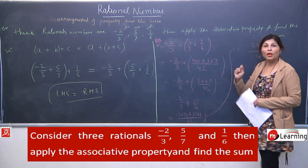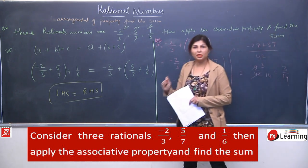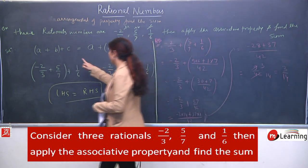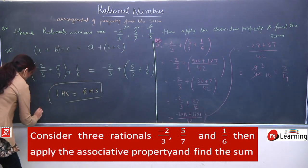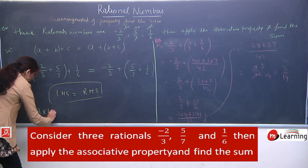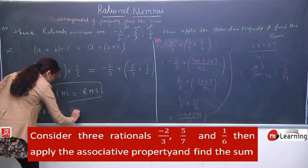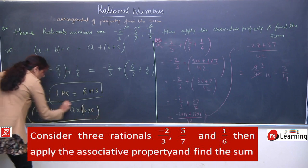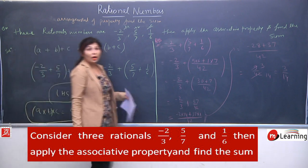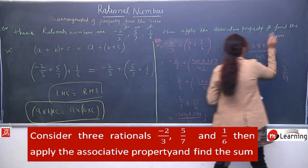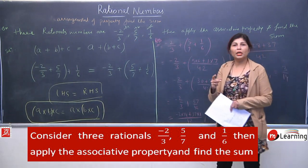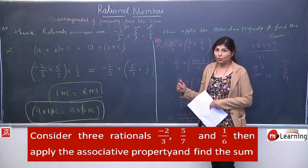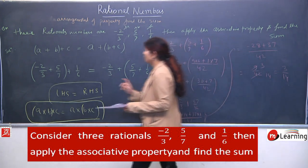Note: if the question says 'apply the associative property' without mentioning sum, you would need to prove it for addition as well as multiplication. The associative property applies for both plus and multiplication. You would have to show both combinations.